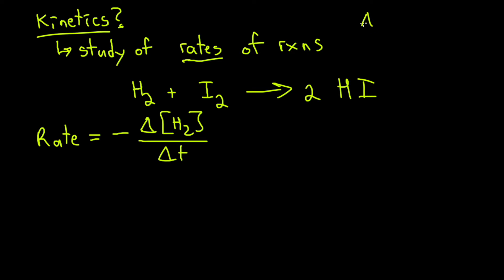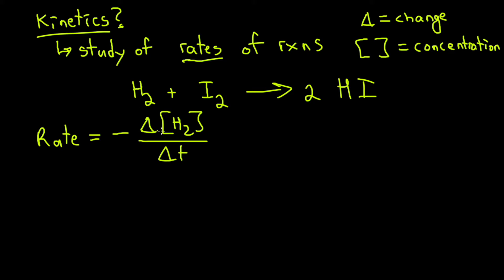Delta means change and the square brackets represent concentration. When we're looking at the change in concentration, we typically take the final minus the initial. So you're going to take two points during the reaction and assess the concentration of each of the reactants and measure.